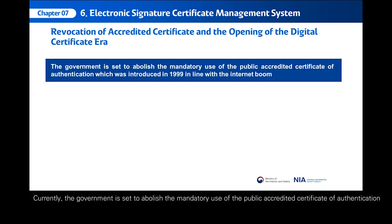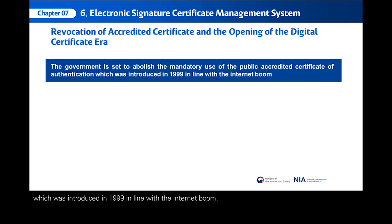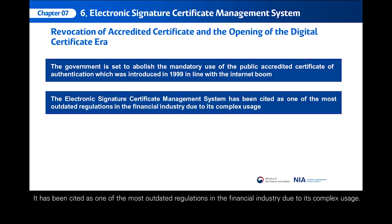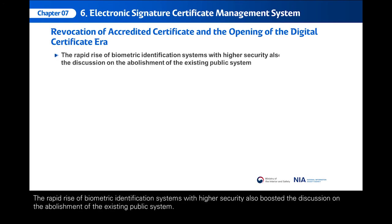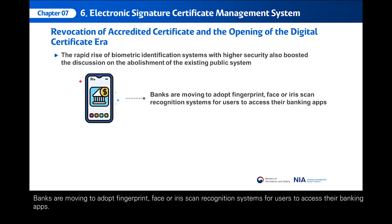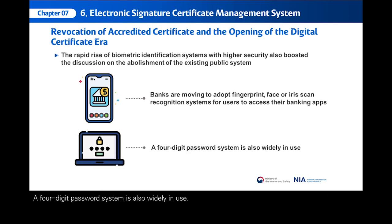Currently, the government is set to abolish the mandatory use of the public accredited Certificate of Authentication, which was introduced in 1999 in line with the Internet boom. It has been cited as one of the most outdated regulations in the financial industry due to its complex usage. The years-long controversy over the system ended in May 2020 when the National Assembly passed a revision to the Digital Signature Act. The rapid rise of biometric identification systems with higher security also boosted the discussion on the abolishment of the existing public system. Banks are moving to adopt fingerprint, face, or iris scan recognition systems for users to access their banking apps. A four-digit password system is also widely in use.